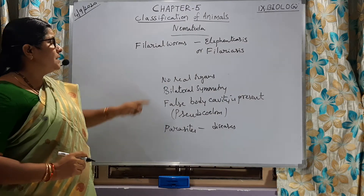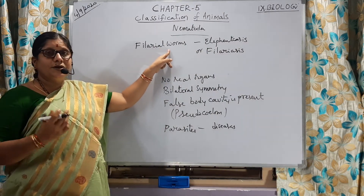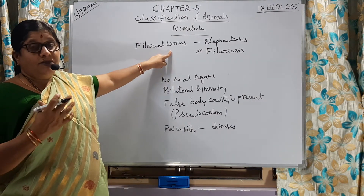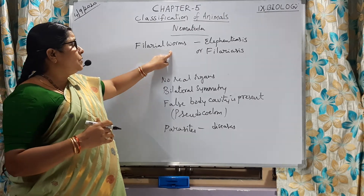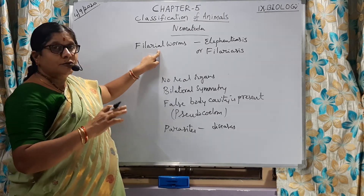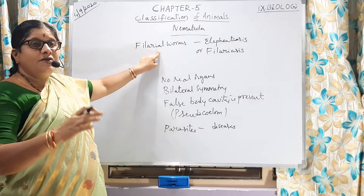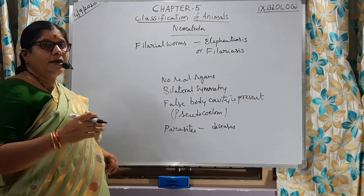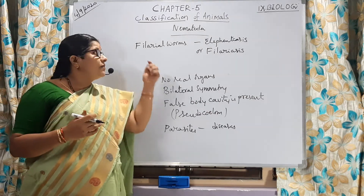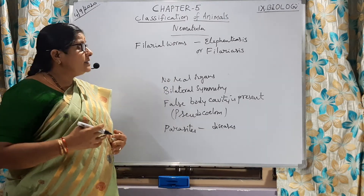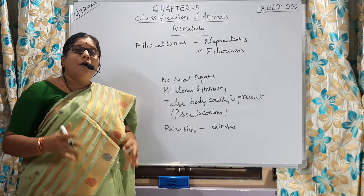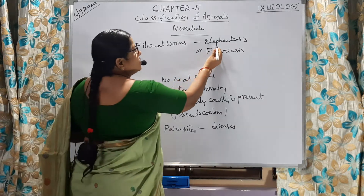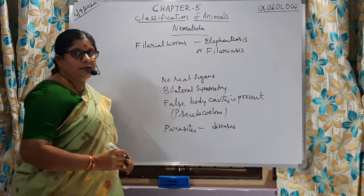Elephantiasis or filariasis — how do filarial worms enter the human body? That is through a Culex mosquito. When a female Culex mosquito bites us, these worms enter the mosquito from carriers. When it visits healthy persons, the worm enters their body. Our body becomes a reservoir for filarial worms, which increase in number and cause swelling of body parts like legs or hands. That disease is called elephantiasis or filariasis.